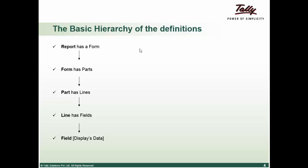Now let's have a quick recap with a little change. A report has a form. One form in display mode can have multiple forms in edit mode, print mode, or export mode. A form contains vertical parts. A part can contain further parts or lines. However, at the end, each part should contain lines. Parts contained in parts can be horizontal.